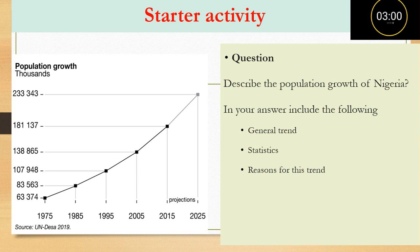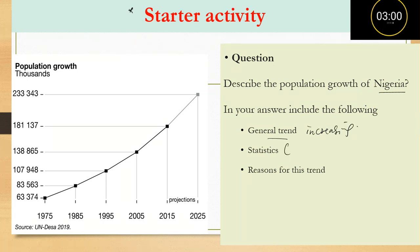This is lesson three in our series of IGCSE Biology. We have a starter activity: describe the population growth of Nigeria. In your answer, include the general trend. From 1975 to 2025 predicted, the population is increasing — that is the general trend. You also need to bring in statistics.